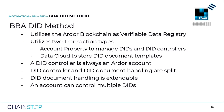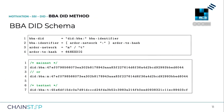The BBA DID schema starts with the prefix 'did' followed by the 'bba' string to indicate it is a BLOBA DID. The BBA method-specific identifier consists of two substrings: the first part indicates the network type — M for mainnet or T for testnet — and can be omitted to indicate mainnet. The second part consists of the transaction hash of the first account property transaction related to the DID.